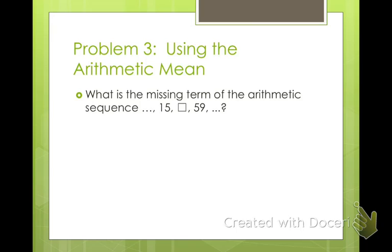For arithmetic mean, it's just finding the one in between. So you add up the two numbers around it and divide by 2. Finding the average in between. So this one is 37. Really easy.